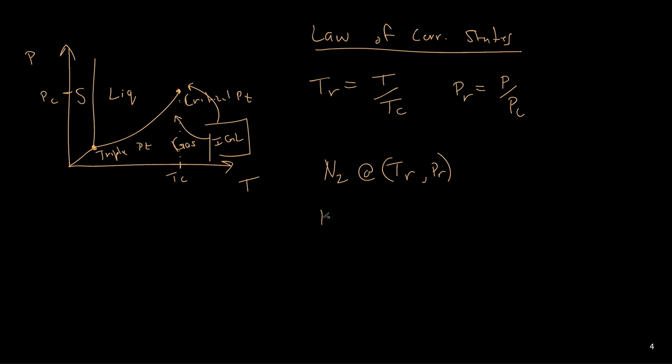What the law of corresponding states relies on is that if I have nitrogen at some T_R and P_R, it would behave exactly the same as, let's say, methane at its same P_R and T_R. This is an approximation that says the most important factor is where your system is in relationship to its critical point.